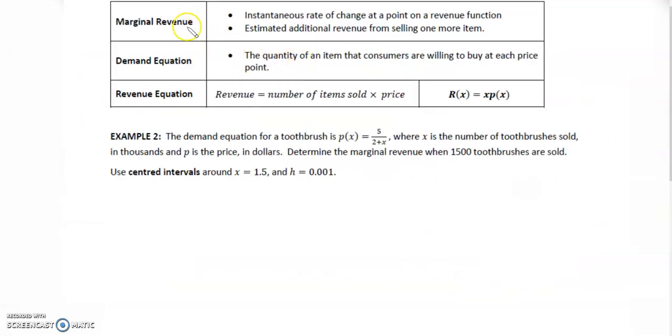Marginal revenue is the instantaneous rate of change at a point on the revenue function. It's the estimated additional revenue from selling one more item. We could be given the demand equation, which is the quantity of an item that consumers are willing to buy at each price point. The revenue equation is revenue equals number of items sold times the price, or x times p of x.